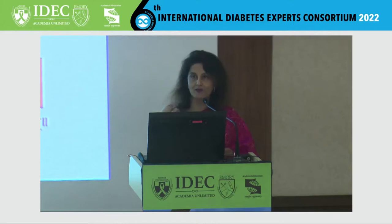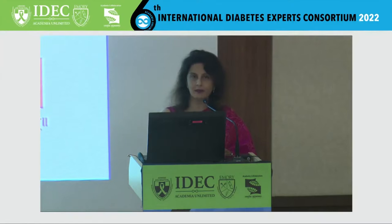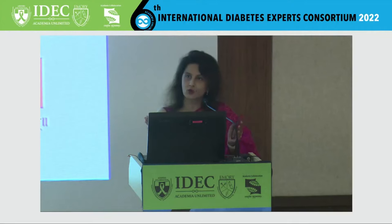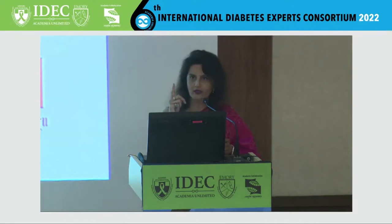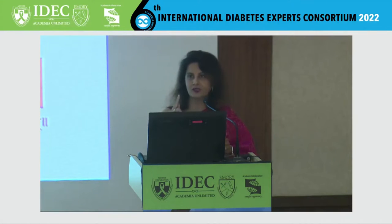By prandial insulin, I mean something to take care of the postprandial sugars. When you want to take care of postprandial sugars, you again have two choices: you have a choice of changing over to a premixed insulin, or starting a rapid-acting analog at the major meal of the day. There are studies which compare these two options — starting a premix to intensify therapy, or giving a prandial one shot along with the basal. It turns out that it is always better to do what we call basal plus: you give one basal insulin and one shot of prandial insulin at the largest meal of the day.